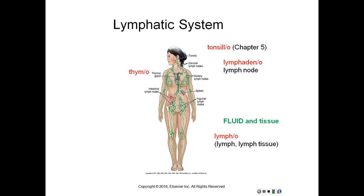You can see the different combining forms for the different structures there. Then we have some more combining forms usually used with the cardiovascular system. Athero means yellowish fatty plaque. Echo is sound. Electro is electricity or electrical activity. Ischio means deficiency or blockage. Thermo means heat. Thrombo means clot.